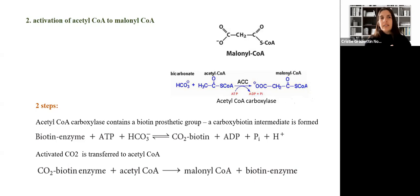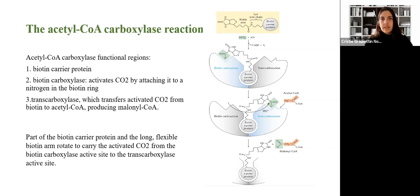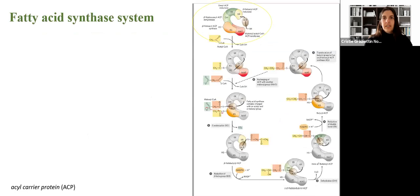Now the second step: we need to do the activation of acetyl-CoA to malonyl-CoA. The enzyme responsible for this process is acetyl-CoA carboxylase. This reaction uses bicarbonate and acetyl-CoA leading to the production of malonyl-CoA. The acetyl-CoA carboxylase has three functional regions: a biotin carrier protein, a biotin carboxylase that activates CO2, and a transcarboxylase which transfers the activated CO2 leading to the production of malonyl-CoA. So now we have acetyl-CoA and malonyl-CoA — we have the pieces.